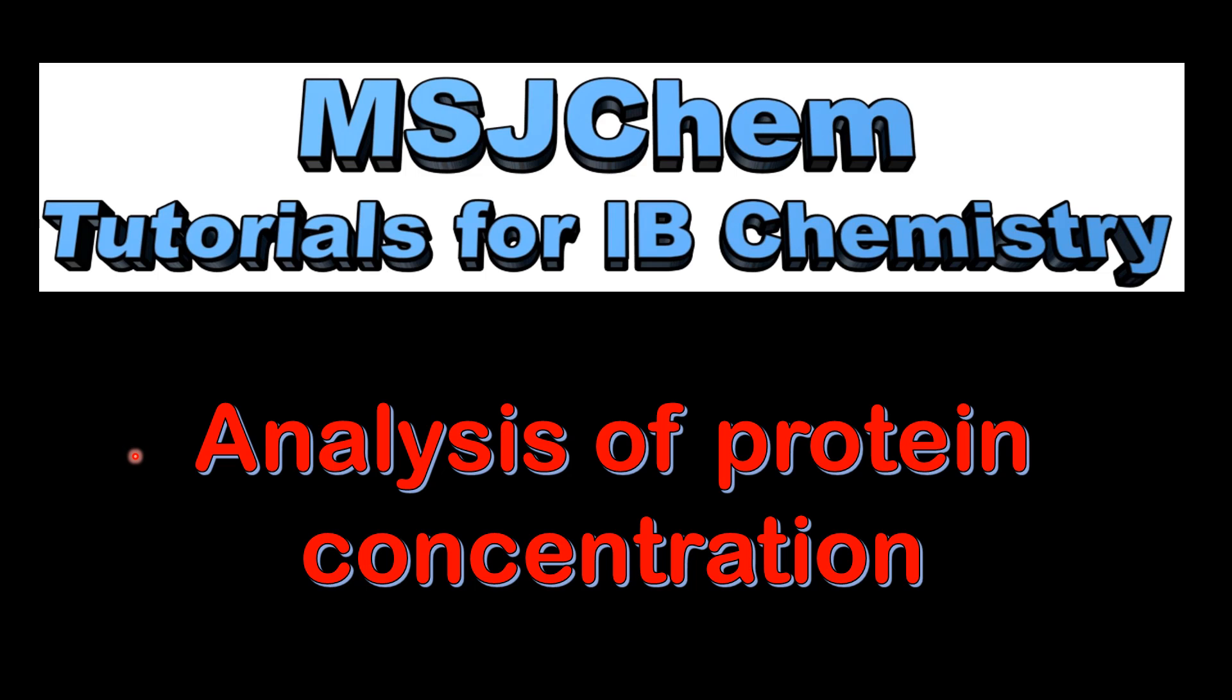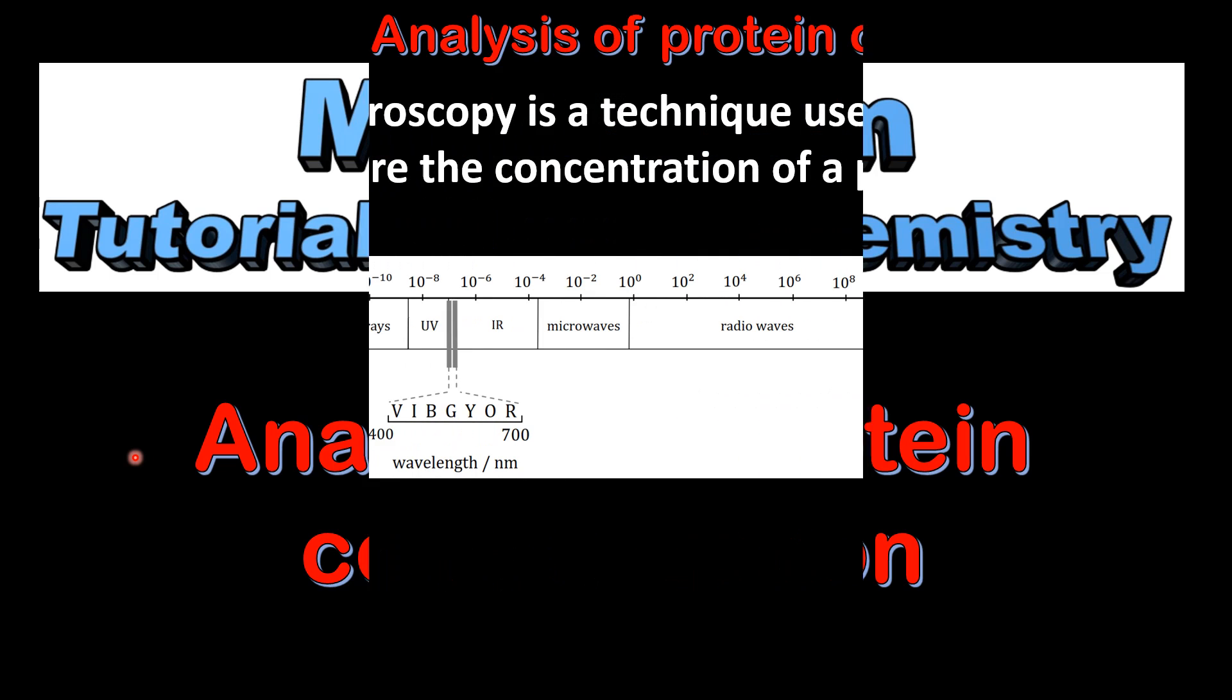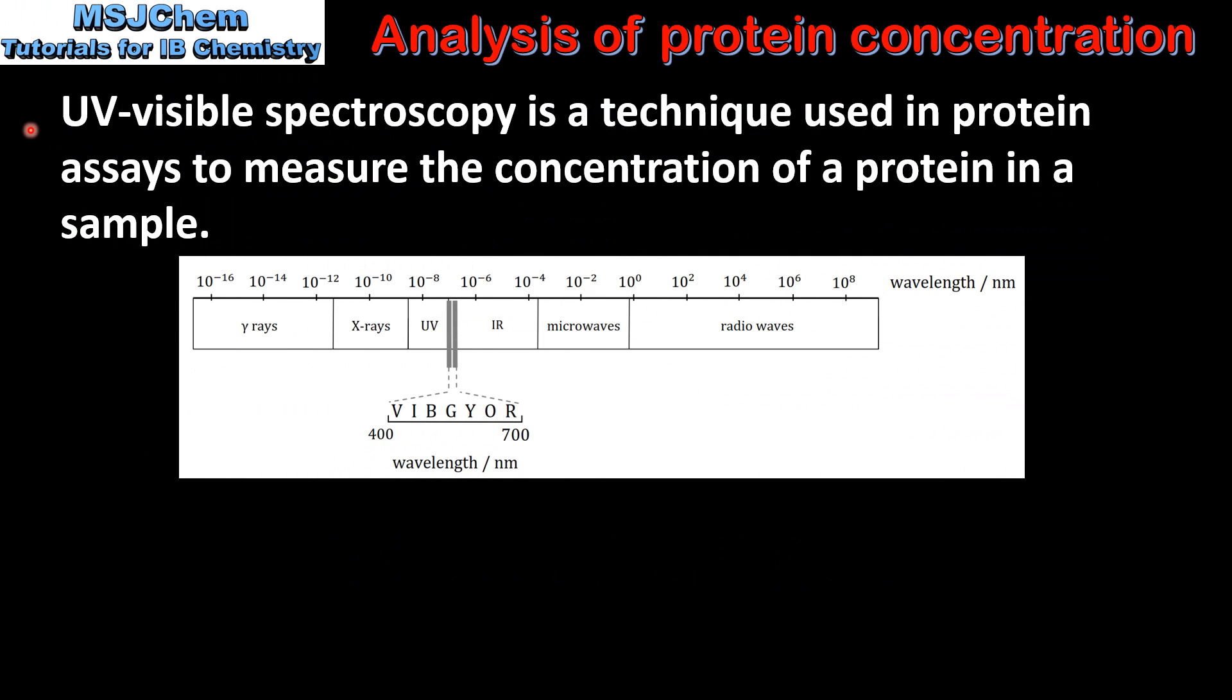This is MSJChem. In this video I'll be looking at analysis of protein concentration. UV visible spectroscopy is a technique used in protein assays to measure the concentration of a protein in a sample.